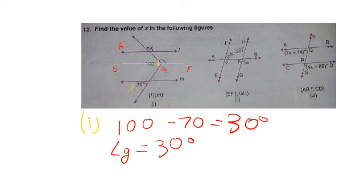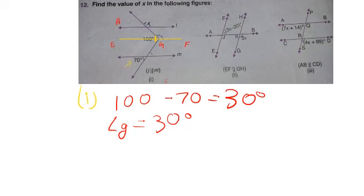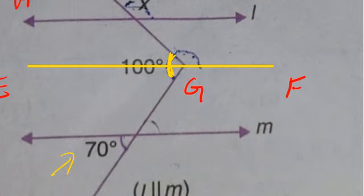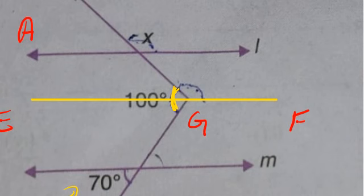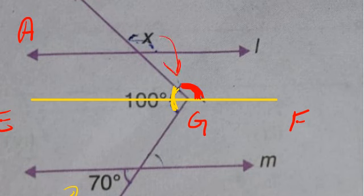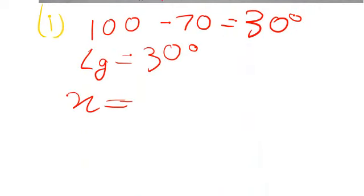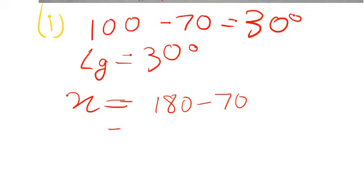Now for angle x: you can see that x and this marked angle are corresponding angles, so they have equal measures. We already know this part is 30 degrees, so angle x equals 180 minus 30.